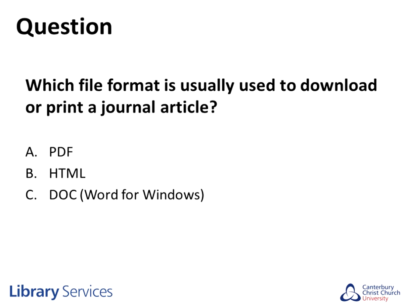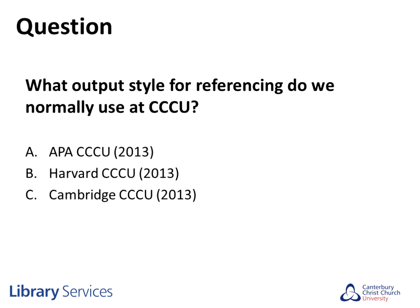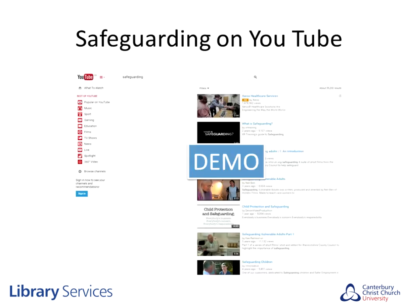Another question: Which file format is usually used to download or print a journal article? Is it A) the PDF, B) the HTML, or C) a Word document? It's the PDF - don't forget the PDF full text article. Final question: What output style for referencing do we normally use at CCCU? Is it A) APA CCCU, B) Harvard CCCU, or C) Cambridge CCCU? It's Harvard CCCU - B is the right answer. APA is another output style but we don't use it, and there is no Cambridge CCCU style.